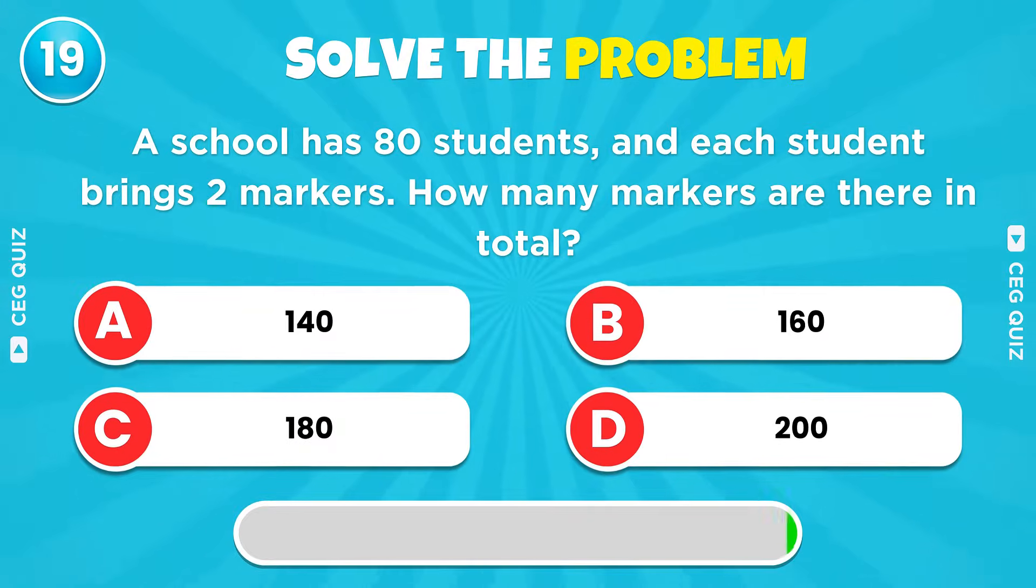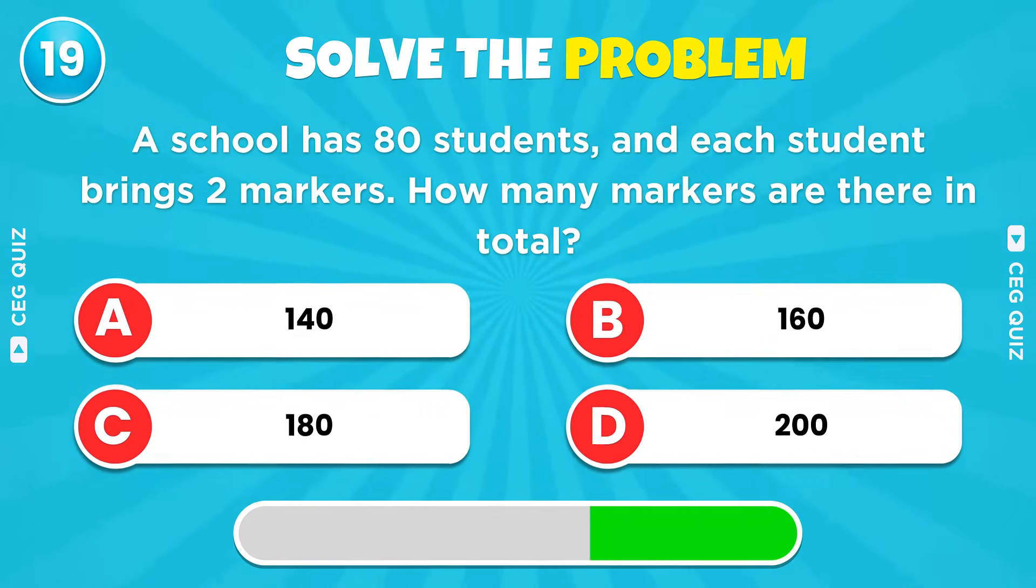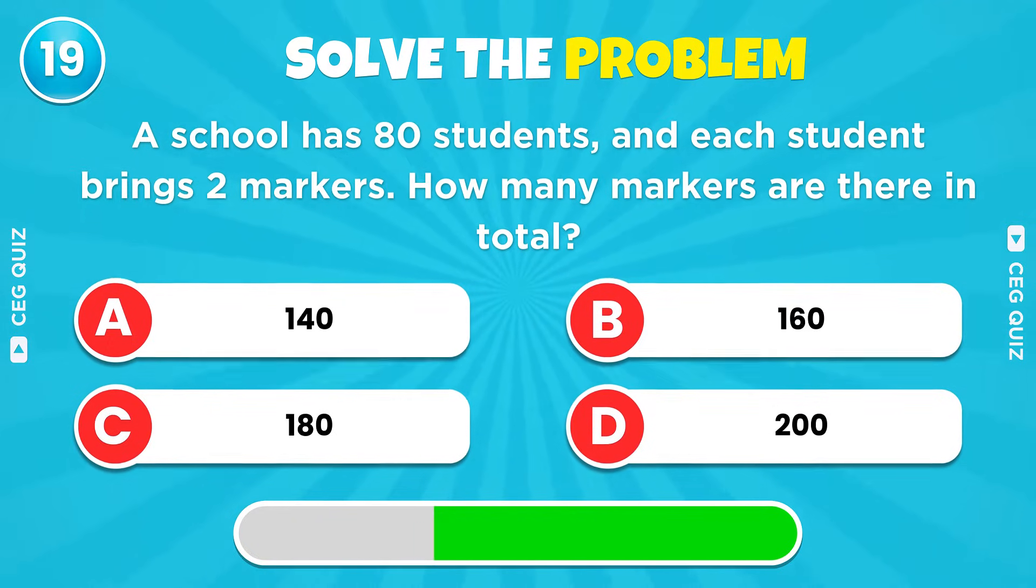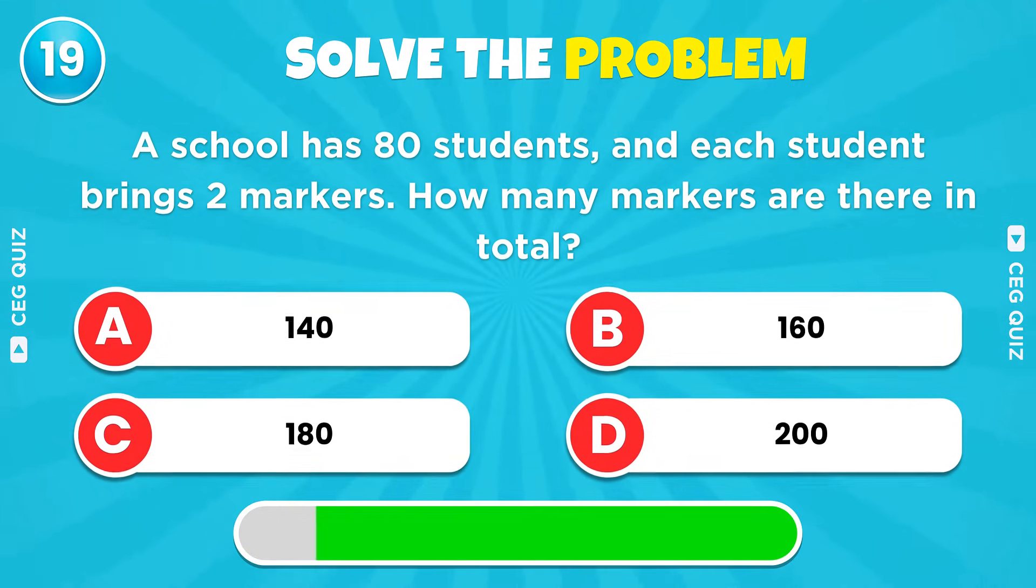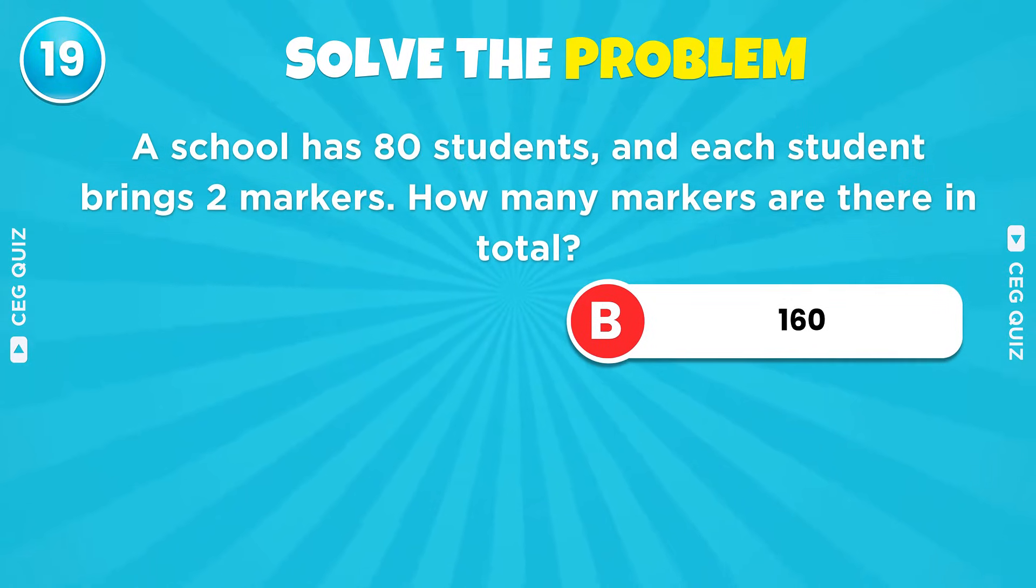A school has 80 students and each student brings two markers. How many markers are there in total? The total is 160.